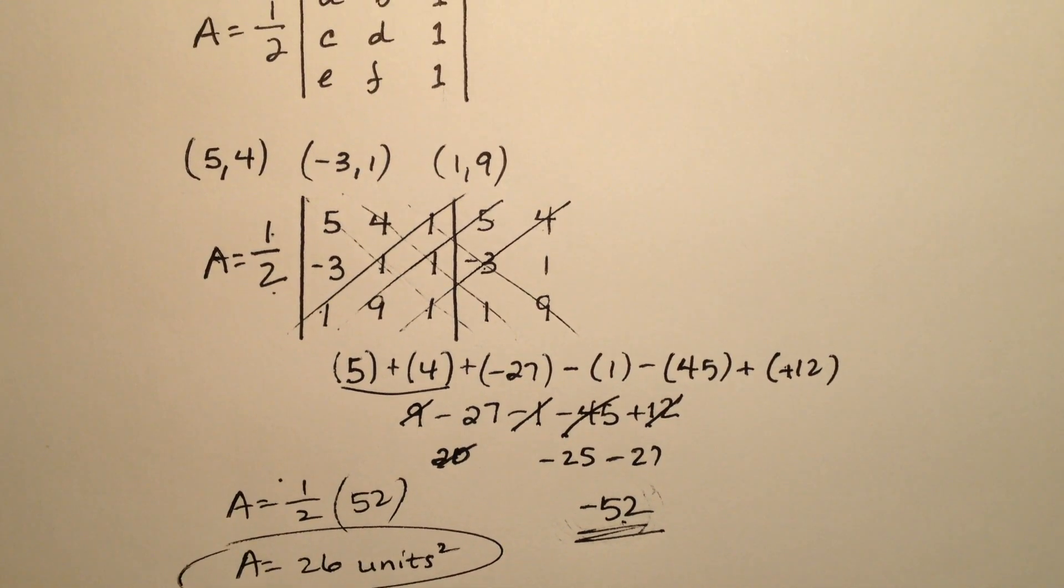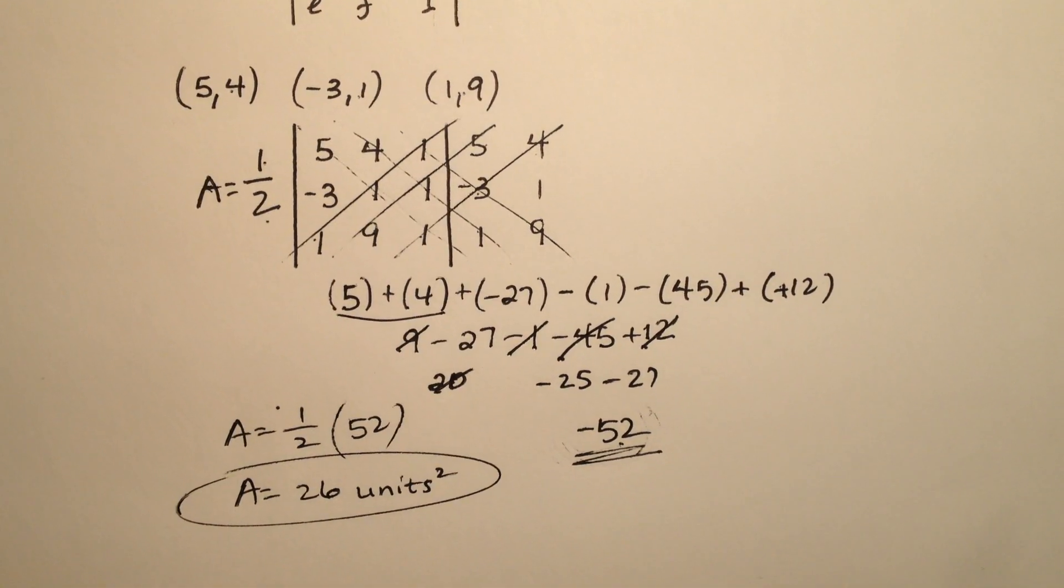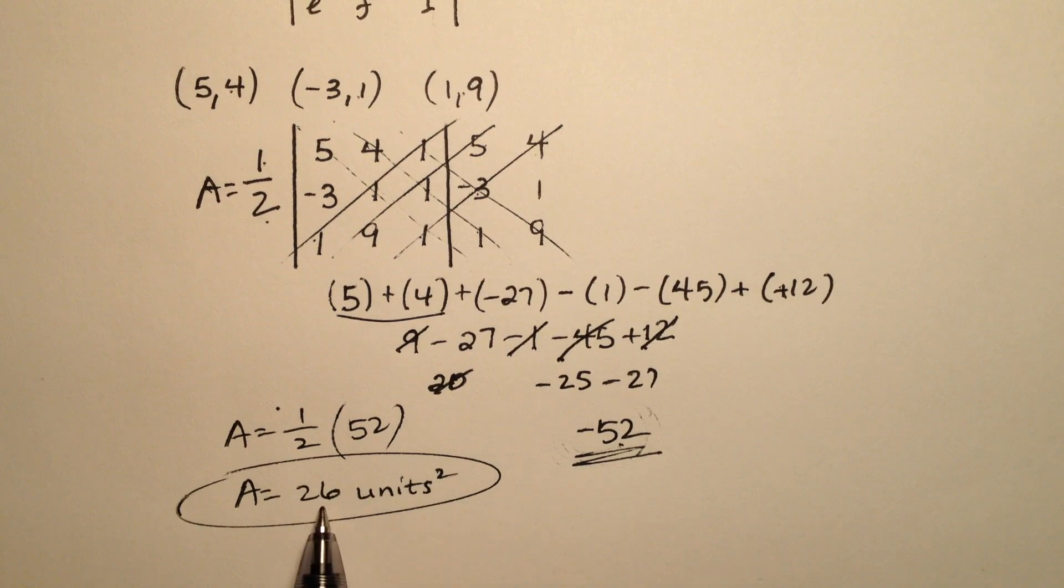So given a triangle with these three vertices in the coordinate plane, I know its area is going to be 26 square units.